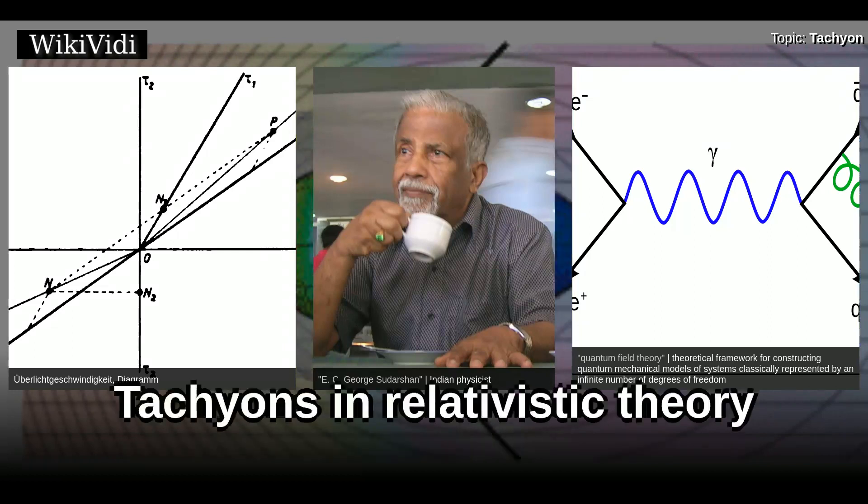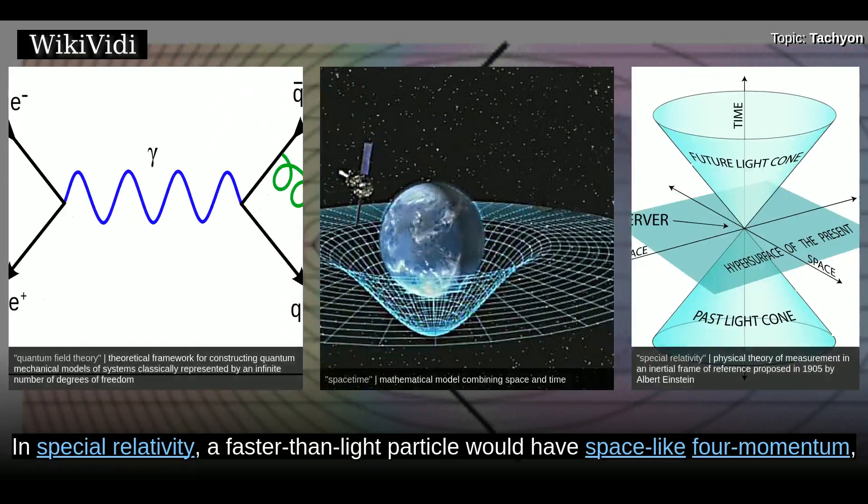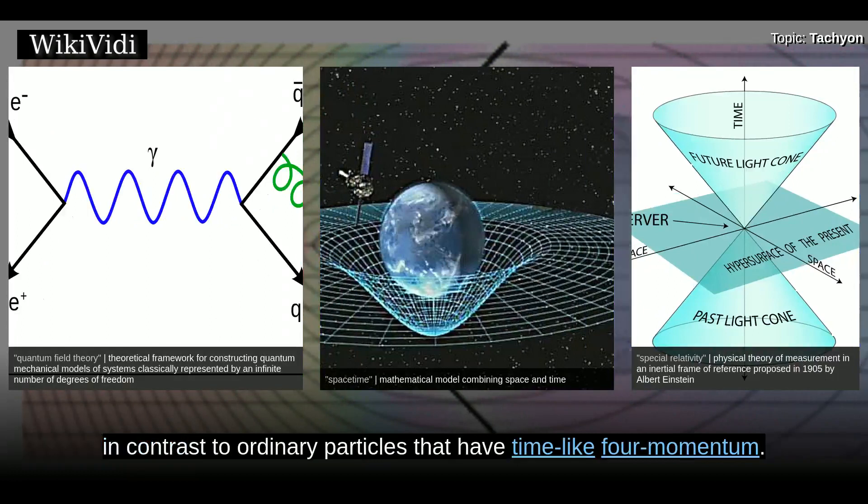Tachyons in relativistic theory. In special relativity, a faster-than-light particle would have space-like four-momentum, in contrast to ordinary particles that have time-like four-momentum.